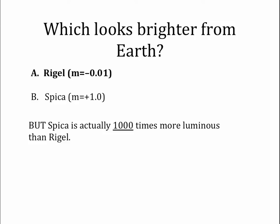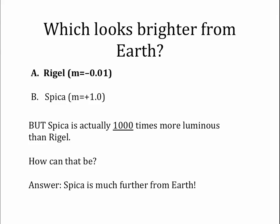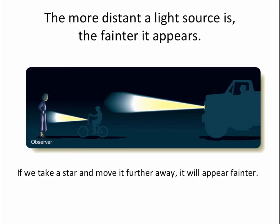However, Spica is actually 1,000 times more luminous than Rigel. If you remember back to chapter 3, luminosity is the total energy output — it's sort of like the wattage — and Spica puts out 1,000 times more energy than Rigel. How can this be if Rigel appears brighter to us? The answer is that Spica is much further away from the Earth. The more distant a source of light is, the fainter it appears.